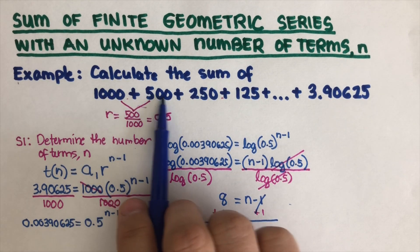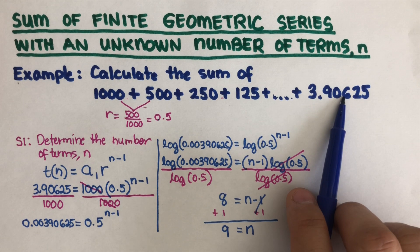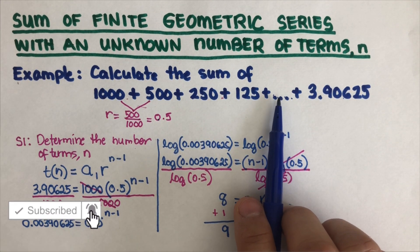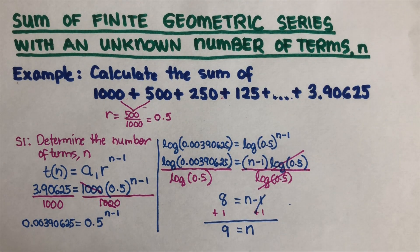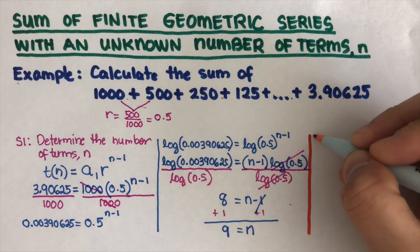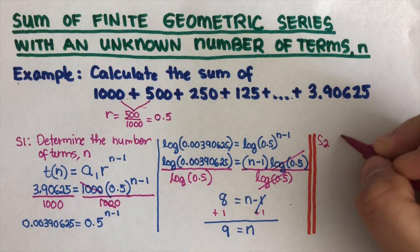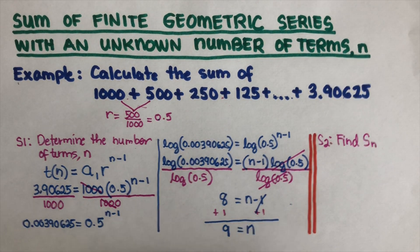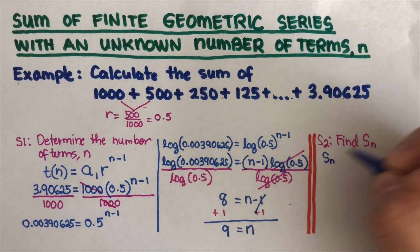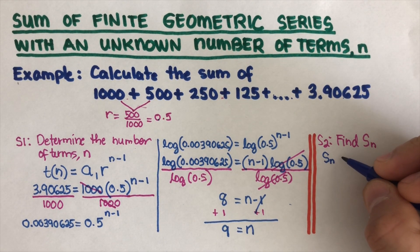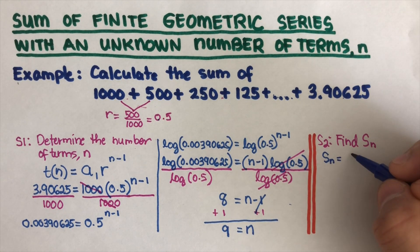So counting out the terms — one, two, three, four, five, six, seven, eight, nine — there are nine total, though some are missing in the written series. Now we are ready for Step 2: find the sum. The formula for S(n), the sum of a finite geometric series, is: S(n) = a₁ · (1 − r^n) / (1 − r).